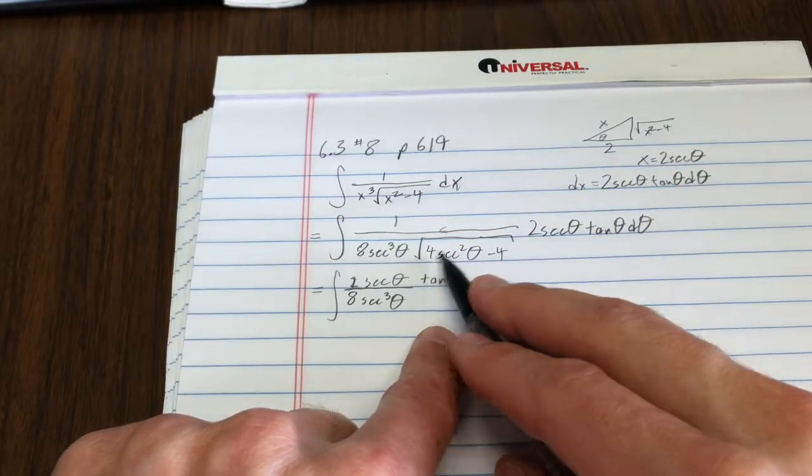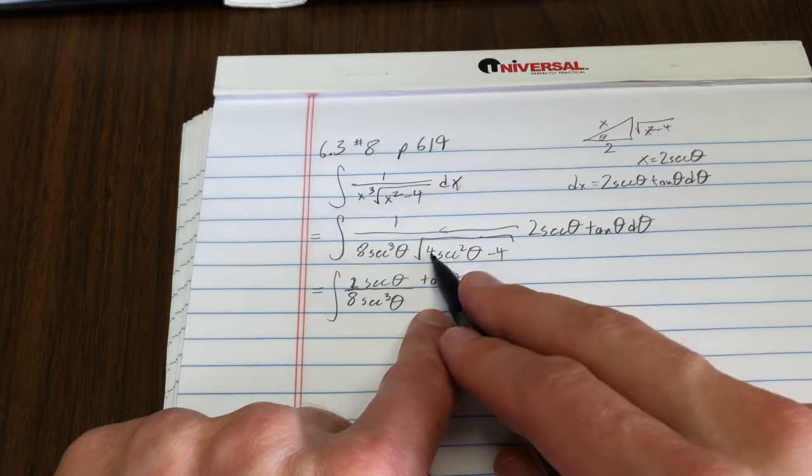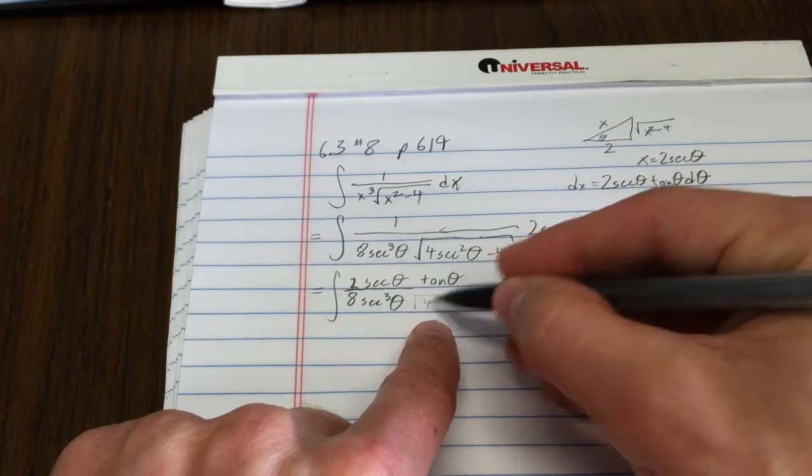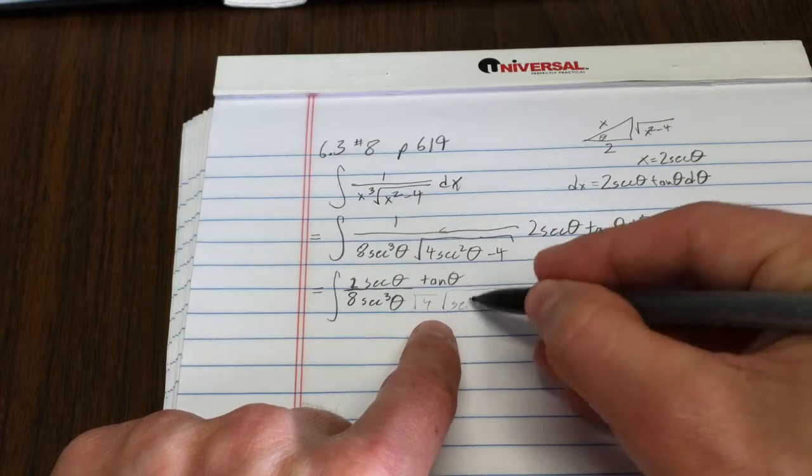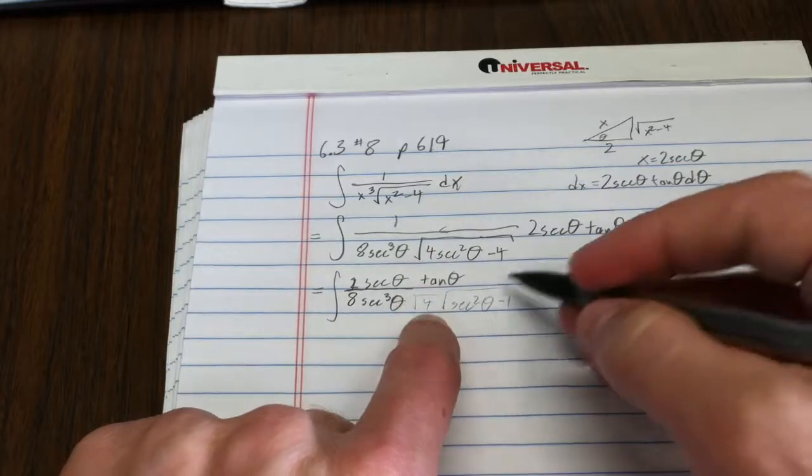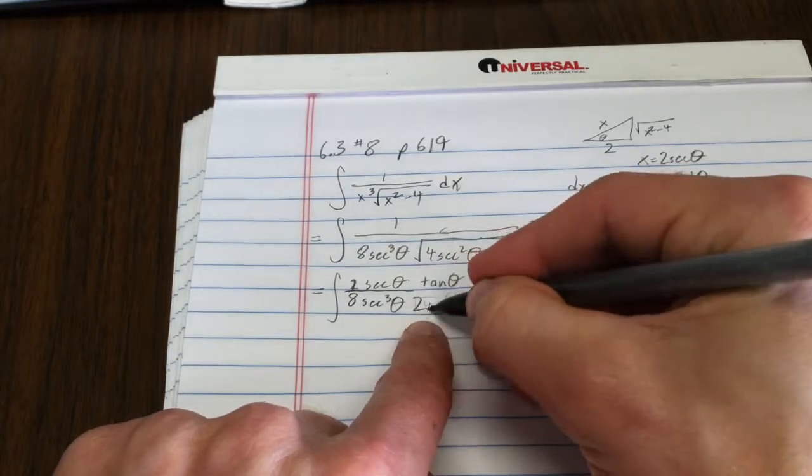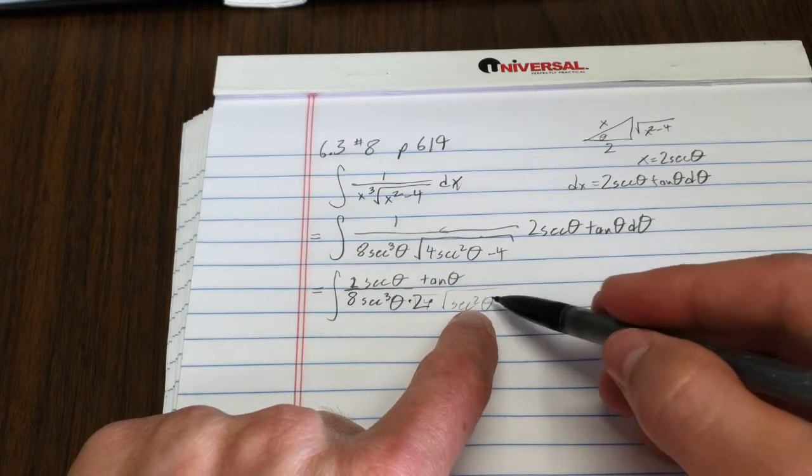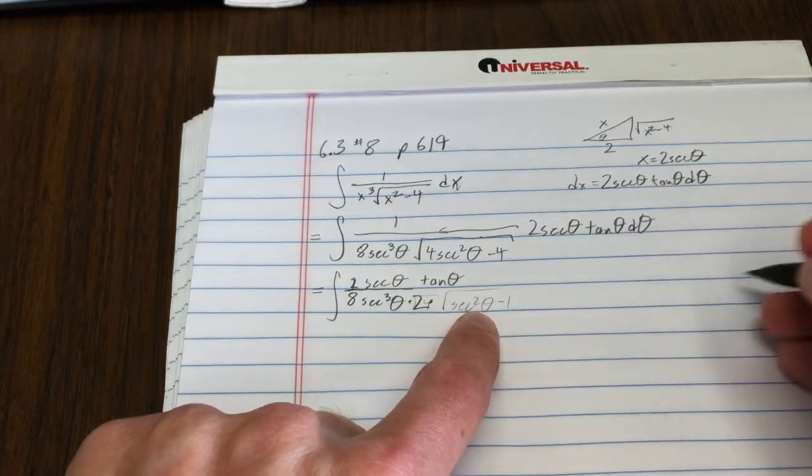Now this has a 4 inside the square root. So I could write that as the square root of 4 times the square root of secant squared theta minus 1. But I know the square root of 4 is 2, so I'll just write that as 2. And I know that secant squared theta minus 1 is really,